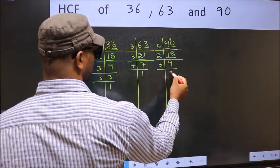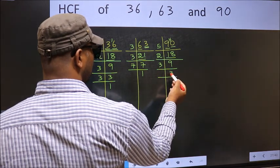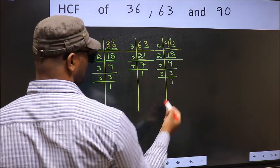9 is 3 threes, 9. Now 3, 3 is a prime number, so 3 times 1 is 3.